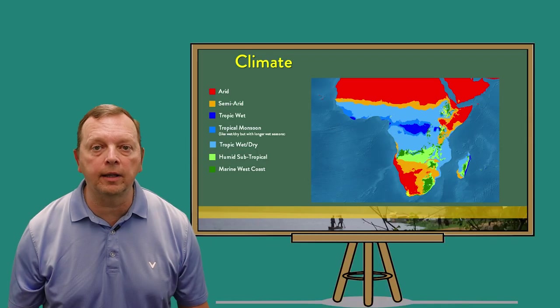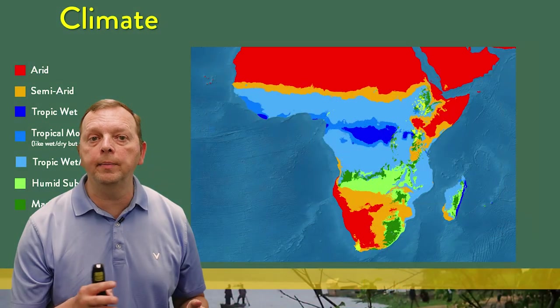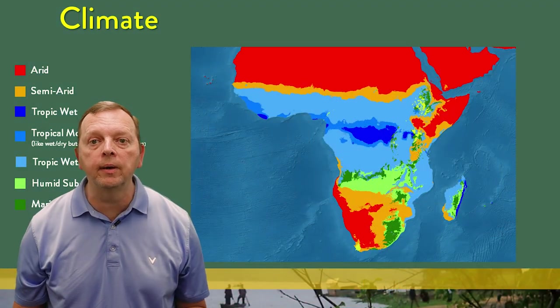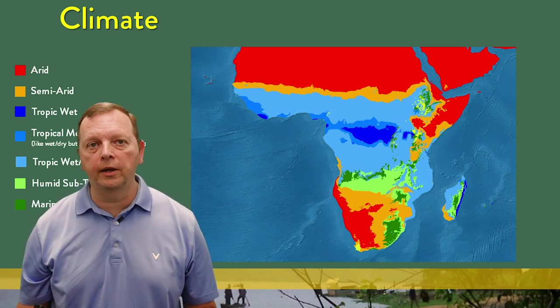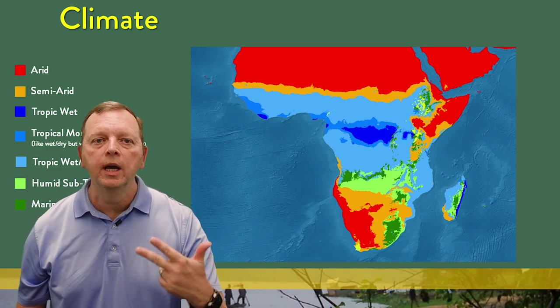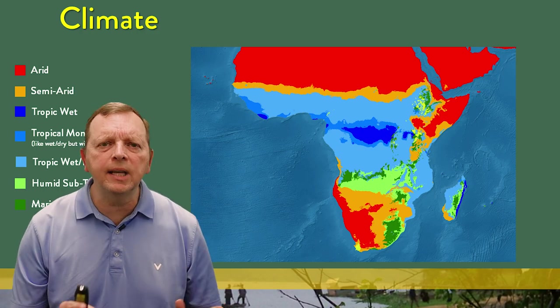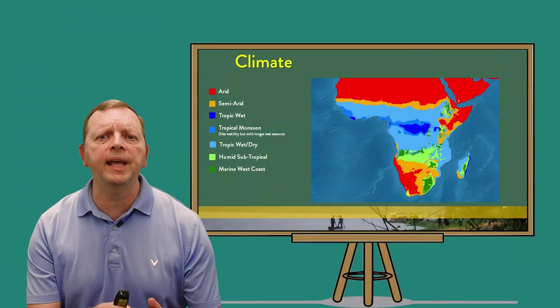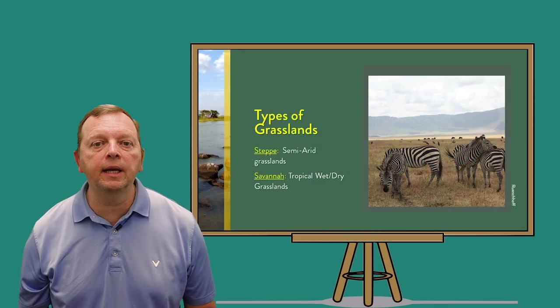Let's take a moment to look at the climate of Africa. We've already seen that the north is dominated by an arid climate in the Sahara Desert, and the Sahel has a semi-arid climate. In the center of the continent, we find tropical climates of tropical wet, tropical monsoon, and tropical wet-dry. Tropical monsoon climate is the same thing as tropical wet-dry but with a longer wet season. One of the types of grasslands we find in Africa is the steppe, which we find in the semi-arid climate such as in the Sahel.